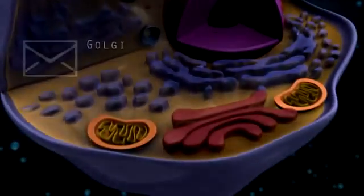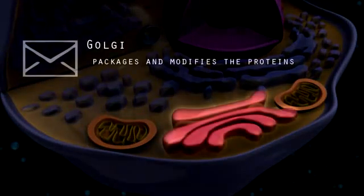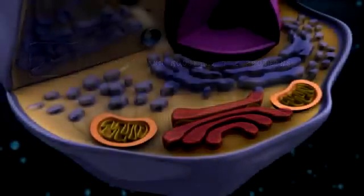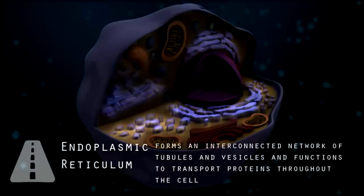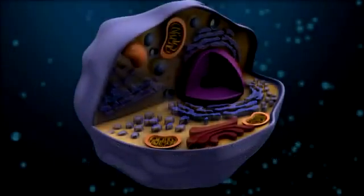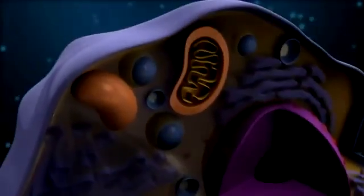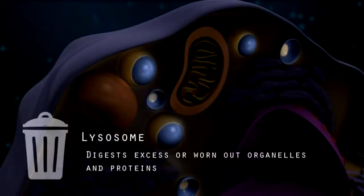The Golgi functions as the post office in the cell and packages and modifies the proteins. The endoplasmic reticulum is the highway of the cell. It forms an interconnected network of tubules and vesicles and functions to transport proteins throughout the cell. Those protein-containing vesicles would be like the trucks on the highways of our city. Many of the protein-producing ribosomes are located on the endoplasmic reticulum.